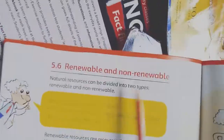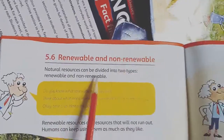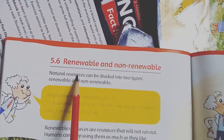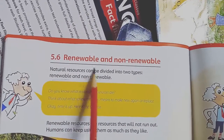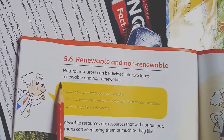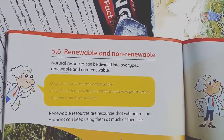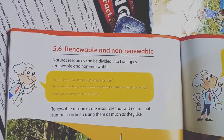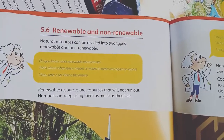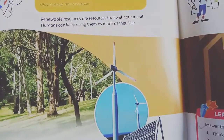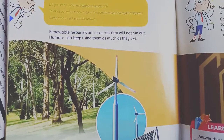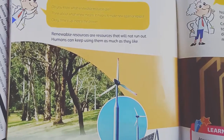Now we come to renewable and non-renewable energy resources. Natural resources can be divided into two parts: renewable and non-renewable — similar to things that can be recycled and things that cannot. Renewable resources are resources that will not run out; humans can keep using them. Some renewable resources are wind energy and solar energy — if humans keep using them, they can be renewed again and again.